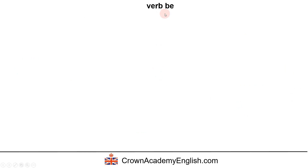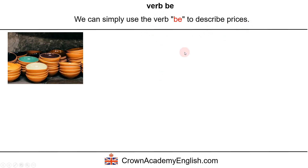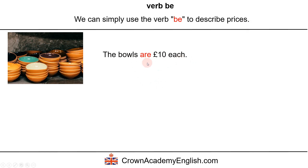We can also use the verb be to describe prices. Example: the bowls are 10 pounds each. Here we have the verb be in the third person plural, present tense.